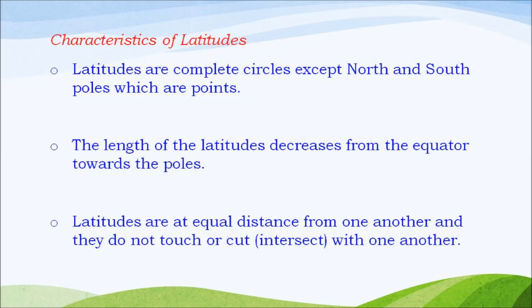Characteristics of latitudes. Latitudes are complete circles except north and south poles which are points. The length of the latitudes decreases from the equator towards the poles. Latitudes are at equal distance from one another and they do not touch or cut with one another.